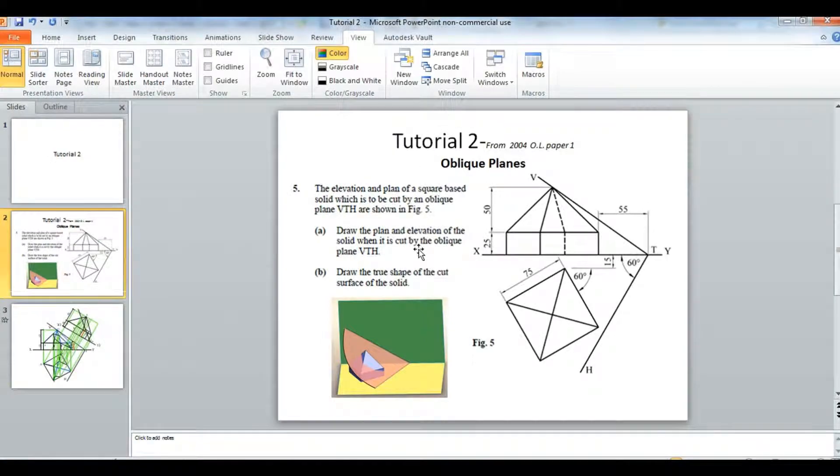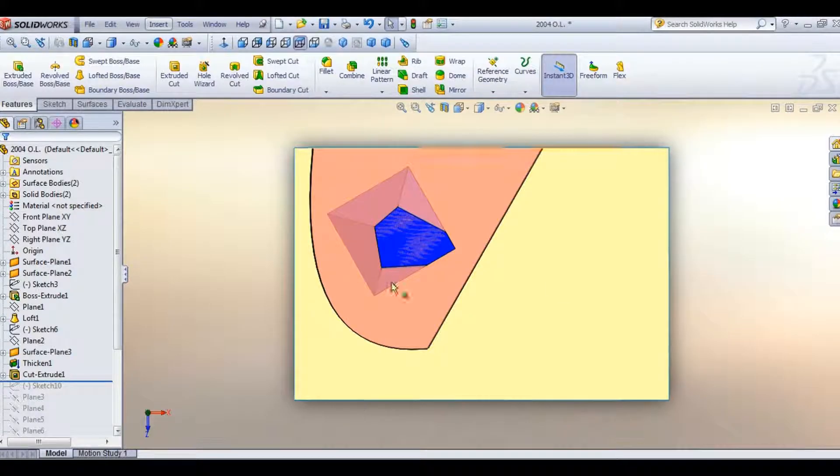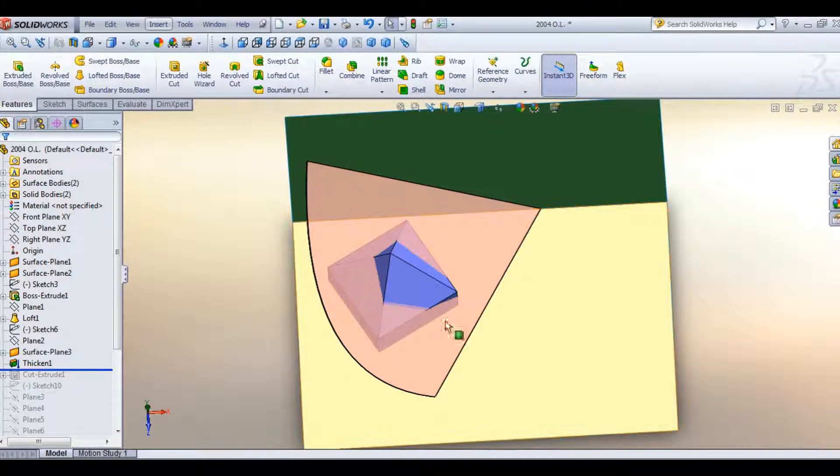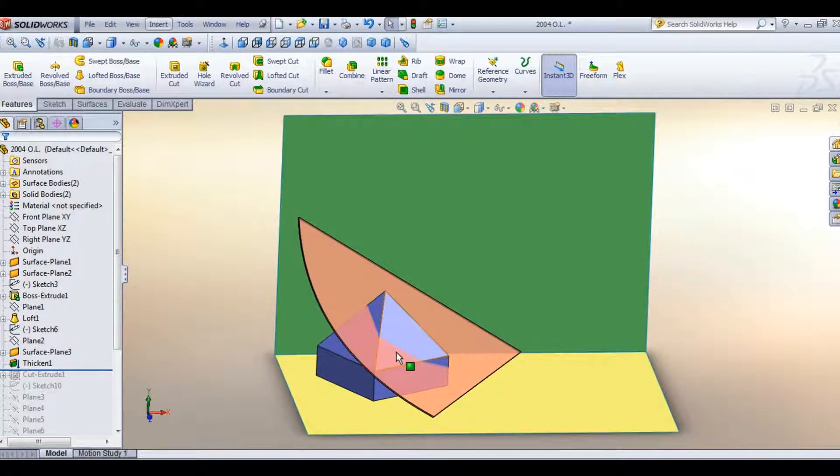So we'll go out into our SolidWorks model and we'll see what that means. They want you to show this object here when it is cut by this pink plane that's in front of you.